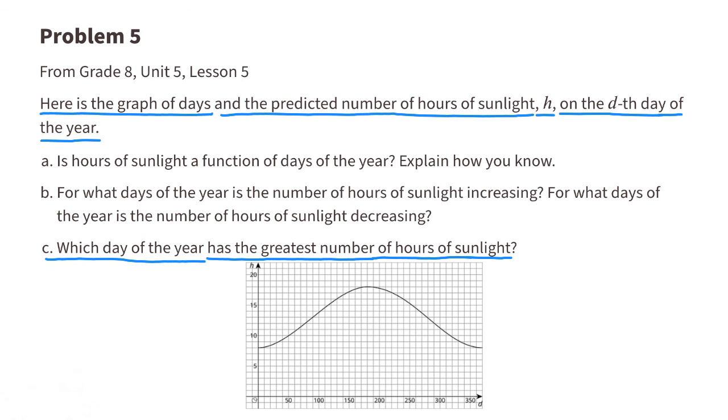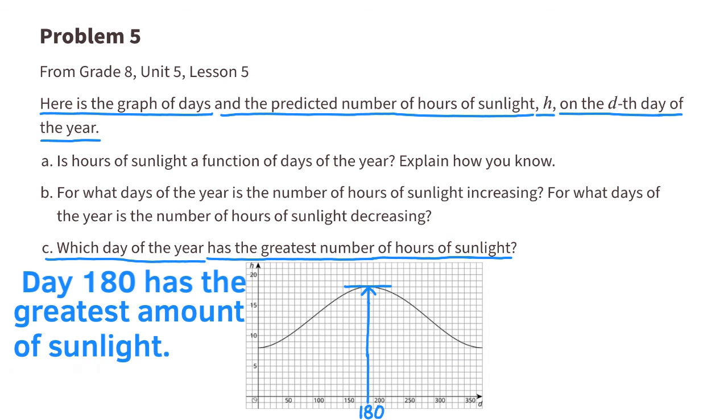C. Which day of the year has the greatest number of hours of sunlight? The highest peak of this graph is day 180. So day 180 has the greatest amount of sunlight. If this tutorial helped you please hit the like button and make sure you're subscribed.